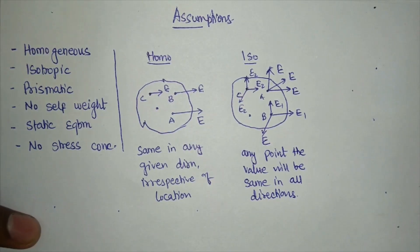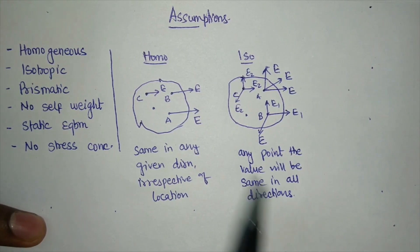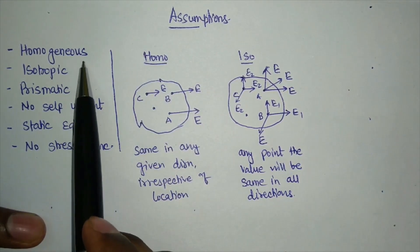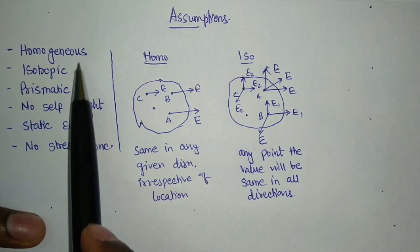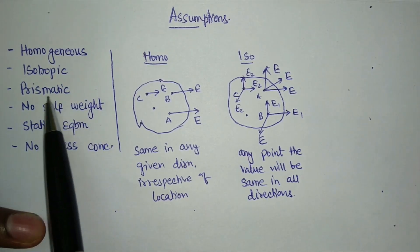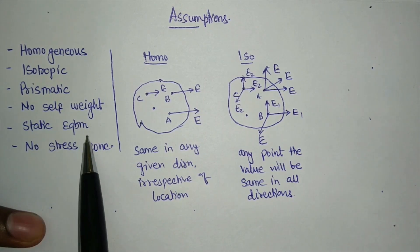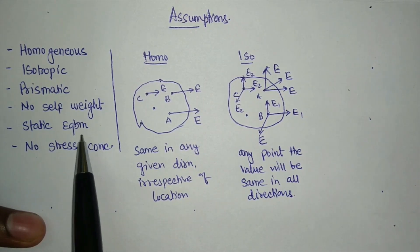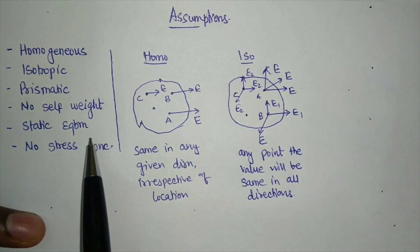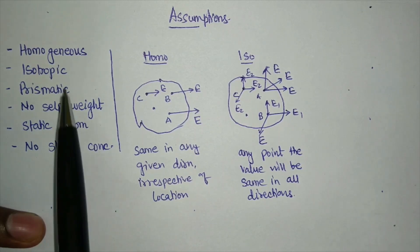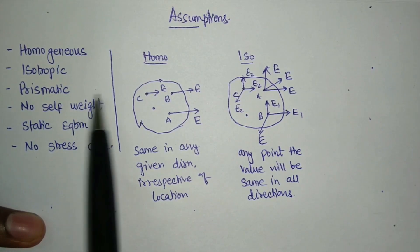In this video we are going to discuss the assumptions that we make while solving any solid mechanics problem or any strength of materials problem. The list of assumptions includes: material will be considered homogeneous, isotropic in nature, the cross-section will be taken as prismatic, the self-weight of the object will be neglected, static equilibrium will be considered to hold true, and stress concentration will be neglected. Now let's take these properties one by one.